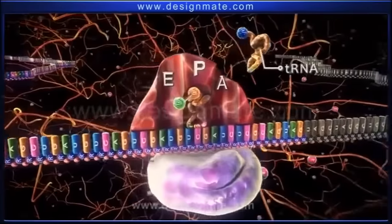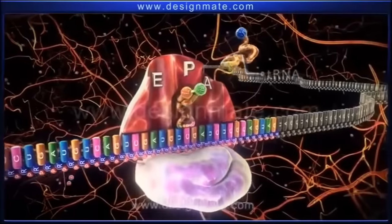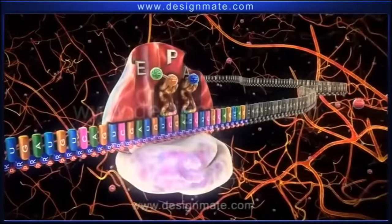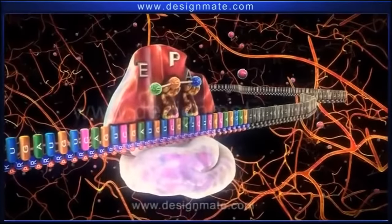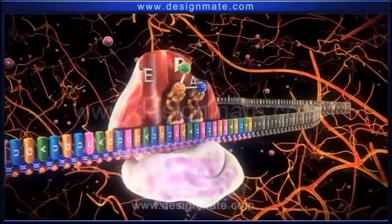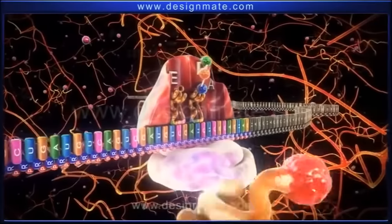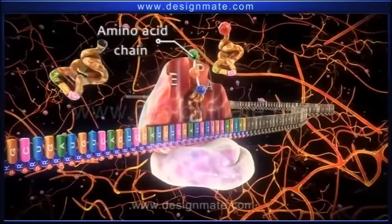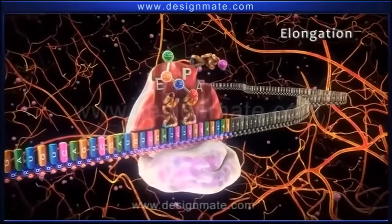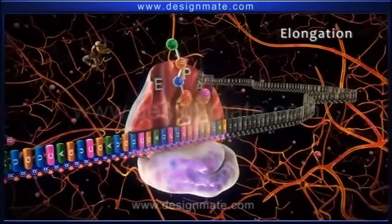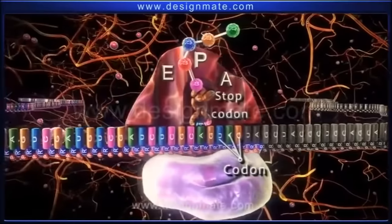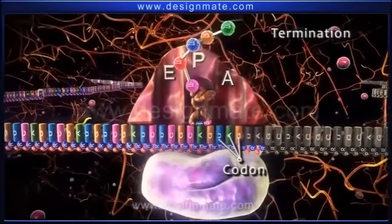Meanwhile, another tRNA carrying an amino acid molecule attaches to the A site. This is followed by the binding of the amino acid molecules. Repetition of this process leads to the formation of an amino acid chain — this event is called elongation. Finally, when the UAG stop codon reaches the A site, elongation is terminated.